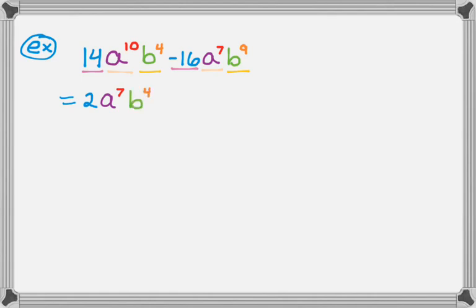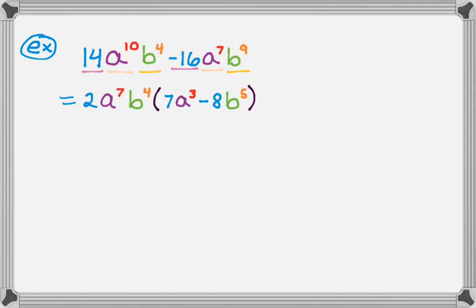That's the greatest common factor — we went through every type of thing. Now put a parenthesis and figure out what's left over. When you factor something out of an expression, you're really dividing it out. I took 2 out of 14, so 14 divided by 2 is 7. I took a to the 7th out of a to the 10th, leaving a to the 3rd. I took b to the 4th out of b to the 4th, leaving 1, so I write nothing. For the second term: negative 16 divided by 2 is negative 8, a to the 7th divided by a to the 7th is 1, and b to the 9th divided by b to the 4th is b to the 5th.